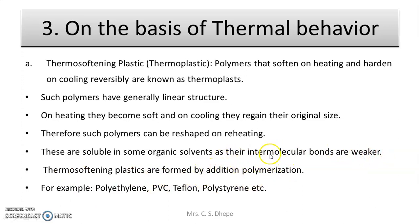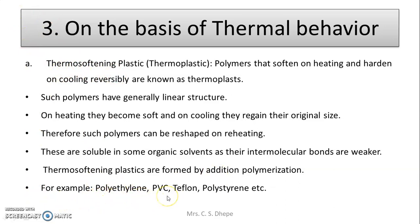Remember, we are going to cover the types of polymerization — there are two types: addition and condensation. This thermosoftening plastic is obtained by addition polymerization. Examples of thermosoftening polymer or thermosoftening plastic are polyethylene, PVC, teflon, and polystyrene.